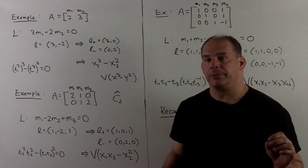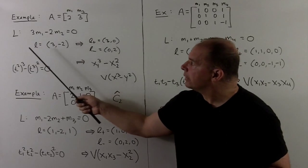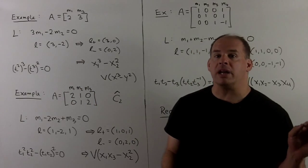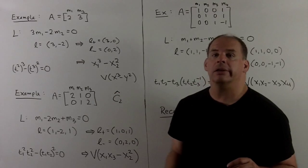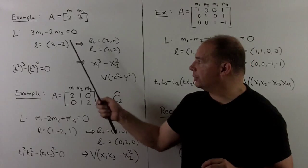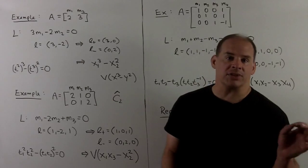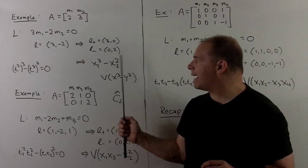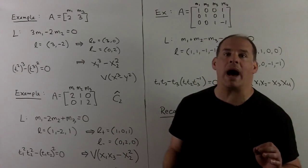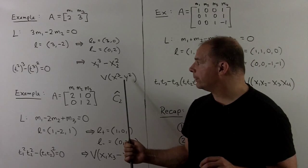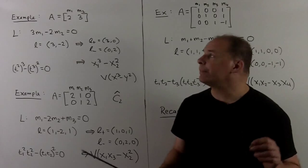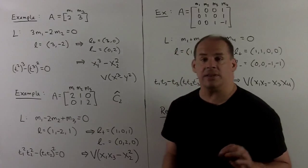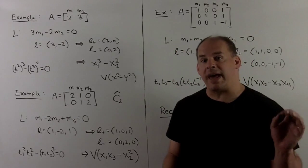Let's run our examples through the process. First, take A equal to (2,3). Looking for capital L, we note 3m₁ − 2m₂ = 0 (since 6 − 6 = 0), so big L is generated by little l = (3,−2). That gives L⁺ = (3,0), L⁻ = (0,2), and the polynomial x₁³ − x₂². Switching to x and y, that's our cubic from before. Checking against φ_A with (t², t³), substituting for x₁ and x₂ gives t⁶ − t⁶ = 0, confirming the vanishing.